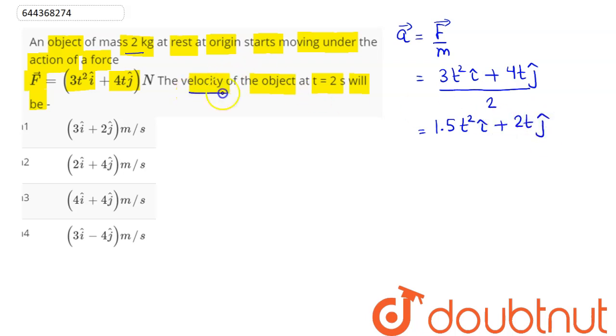We need to find the velocity of the object. Hence, we can say this acceleration equals the rate of change of velocity, that is dv/dt. Hence, we have the value of dv/dt.